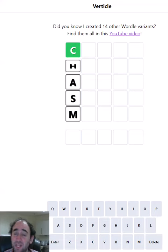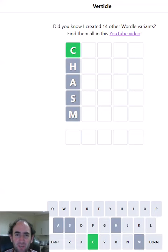Hello again and welcome to today's attempt at Verticle in a Minute. We have a green C in the first column, so C is the first letter of the word. The fact that it was the first letter of my guess is just a coincidence.